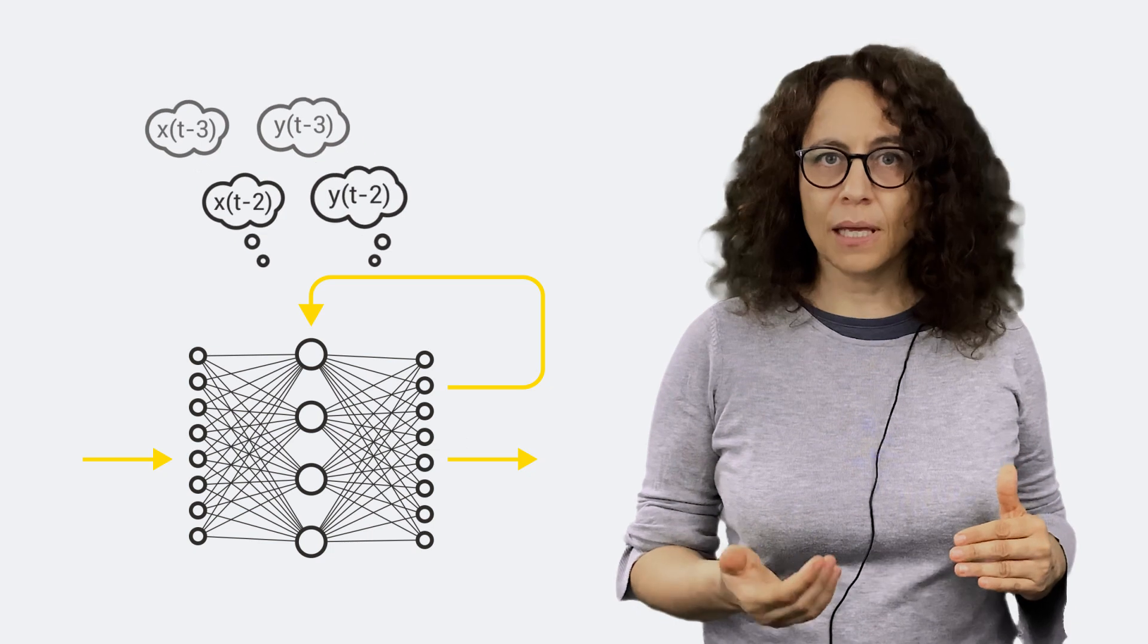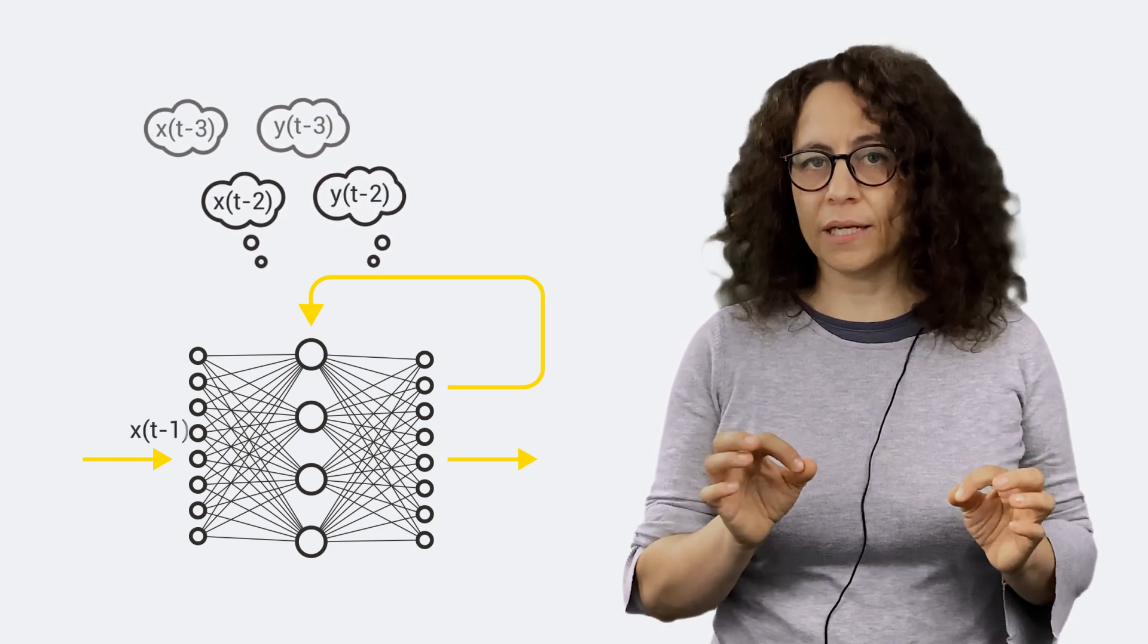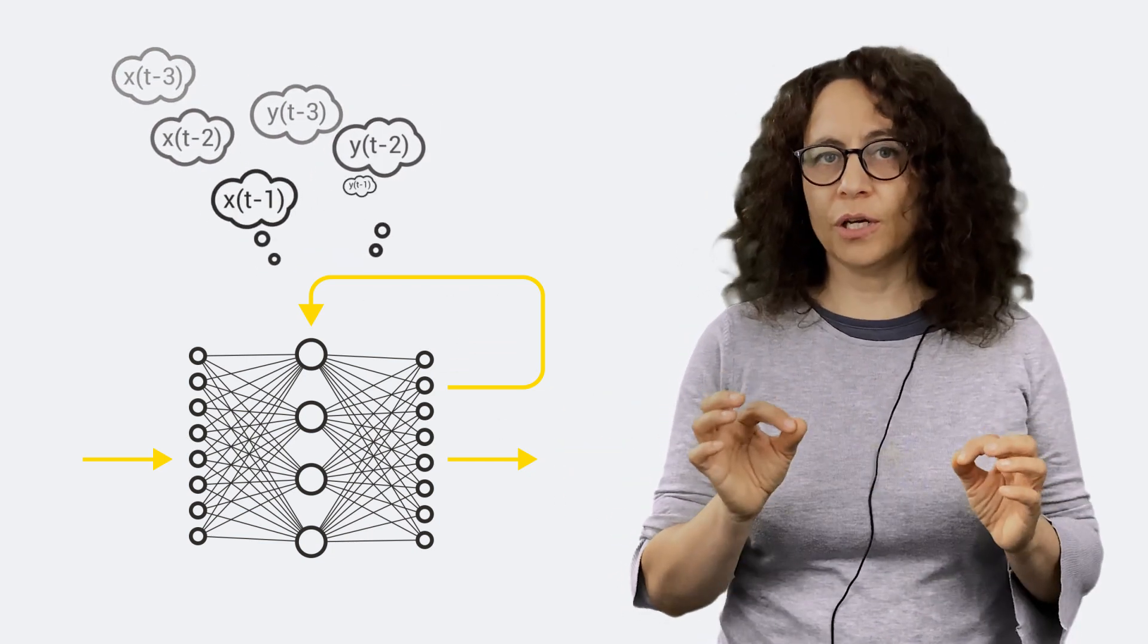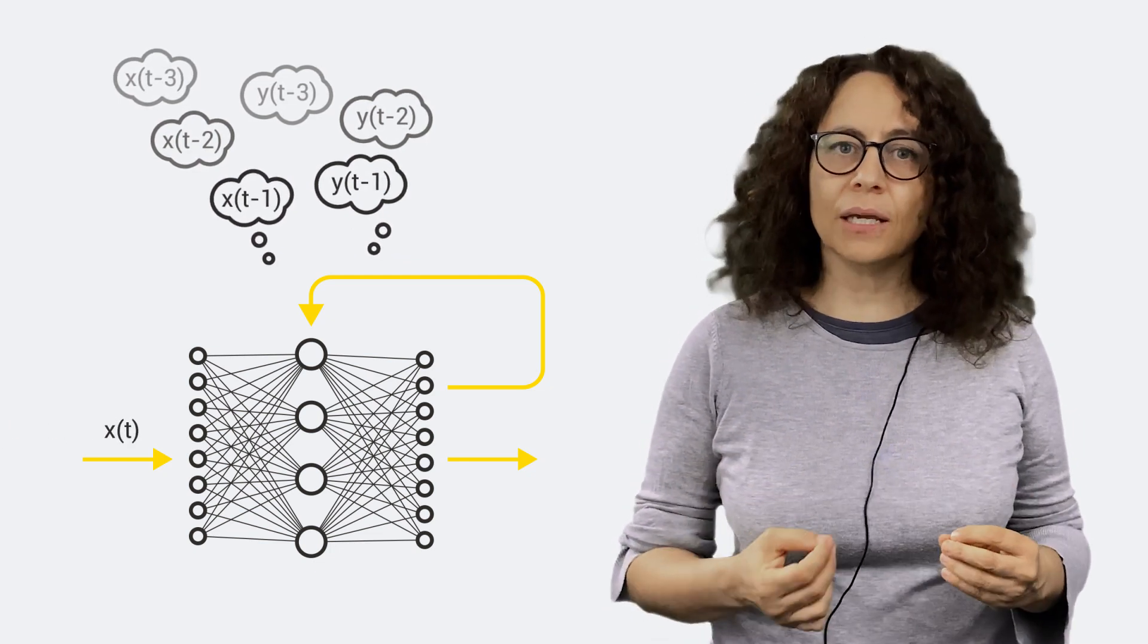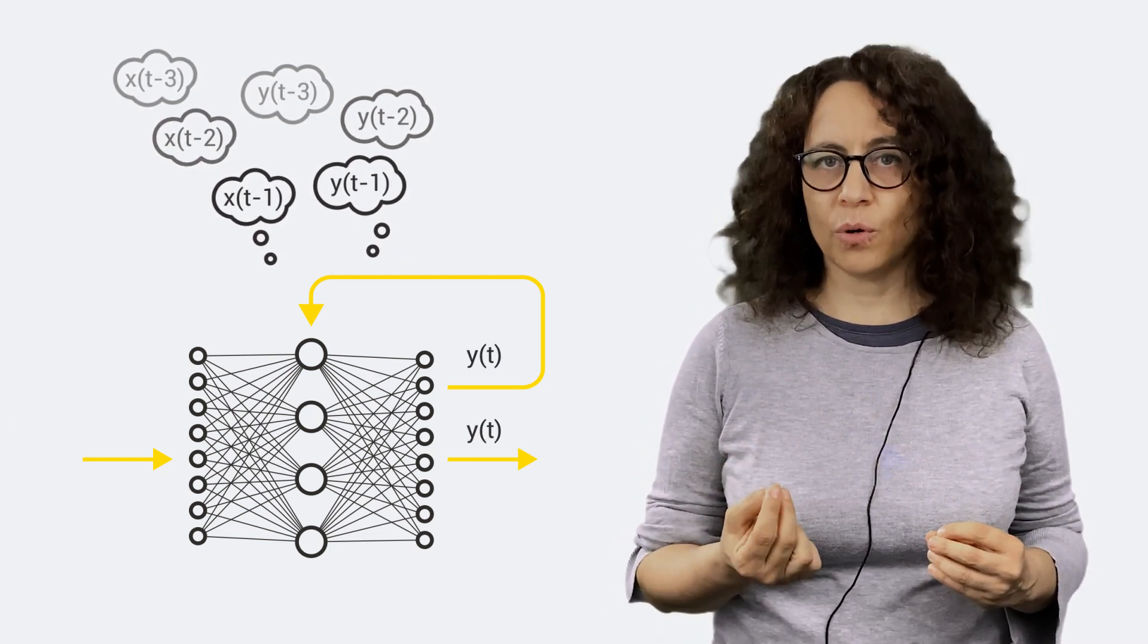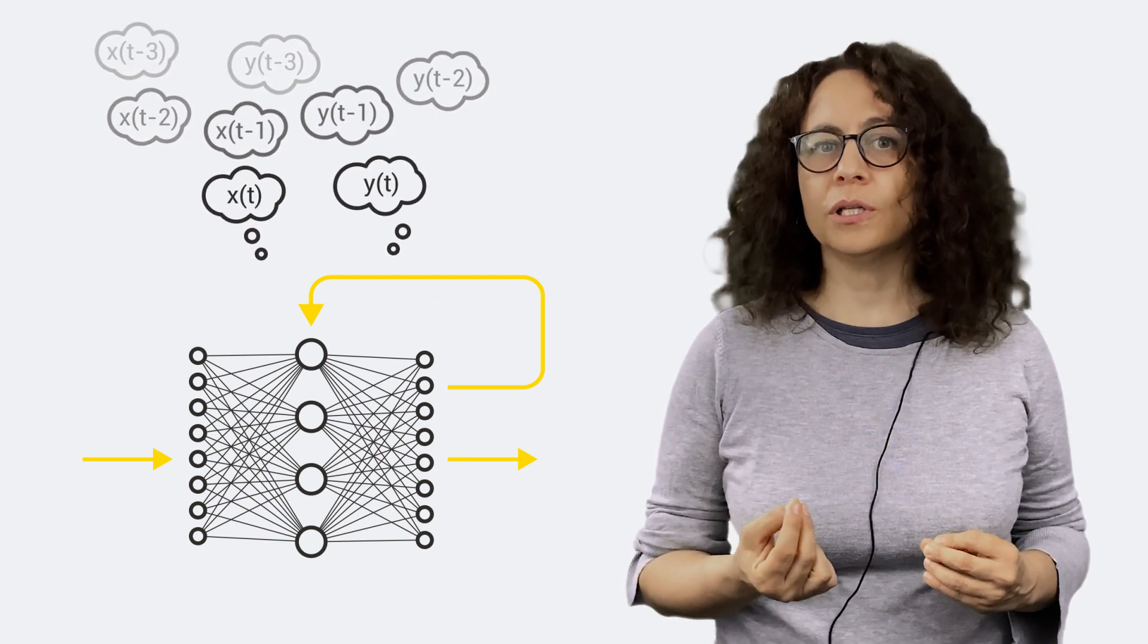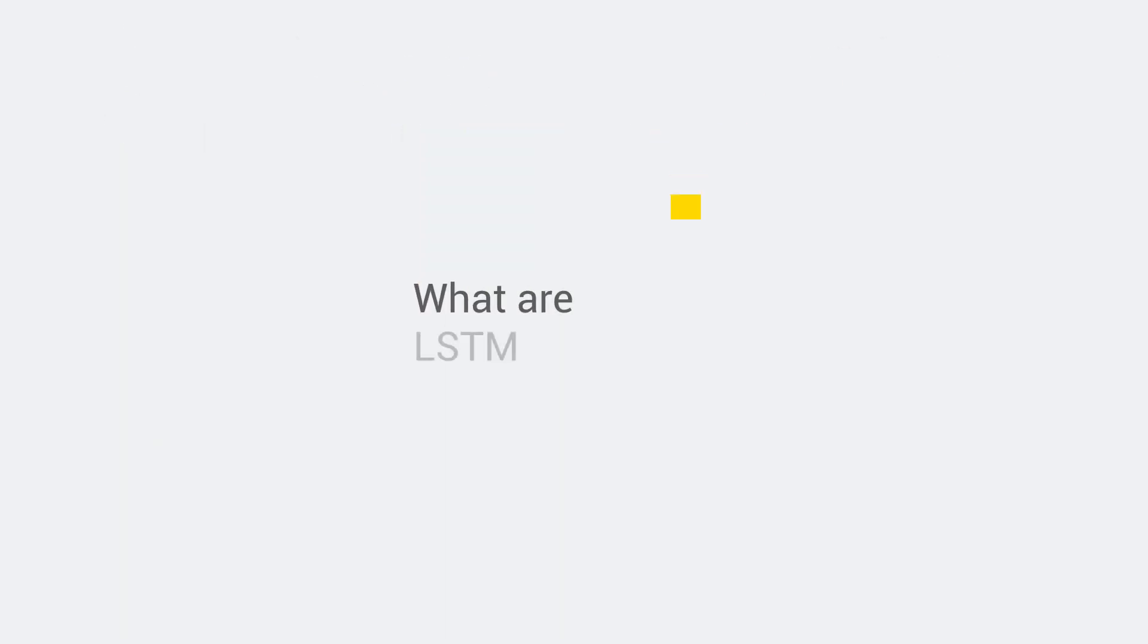At each time t, the network has as input the input vector available at time t and the output vector of the recurrent unit at time t-1. Practically, we introduced a memory of past inputs by reusing the output generated at the previous time t-1. What are LSTM units?